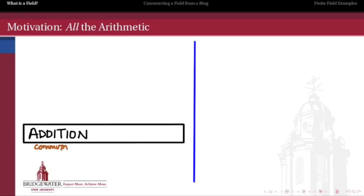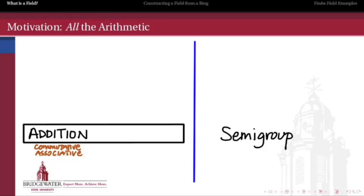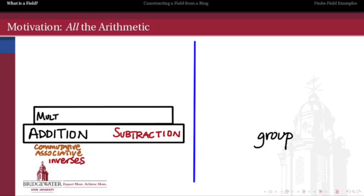To put things into perspective: if we start by thinking about just addition, the natural numbers form a good setting. Addition in the natural numbers is commutative and associative, so the natural numbers form a semi-group. It's a semi-group and not a group because it doesn't necessarily have additive inverses. If we do have additive inverses and a notion of subtraction, then we have a group. Then to get more structure, we build multiplication, which must distribute over addition, giving us a ring.